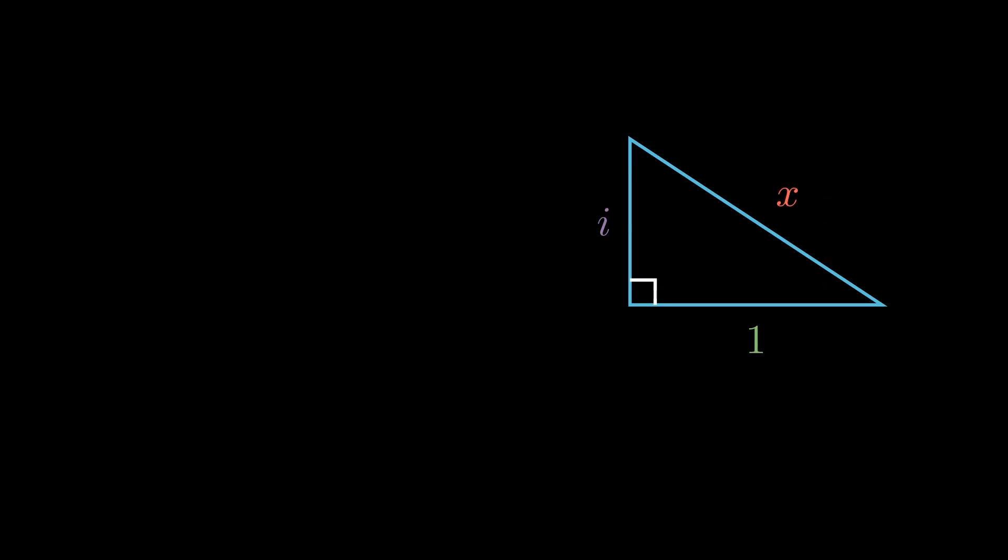Well, from the Pythagorean theorem, we know that a squared plus b squared equals c squared. Applying this to our triangle, we have 1 squared plus i squared equals x squared.